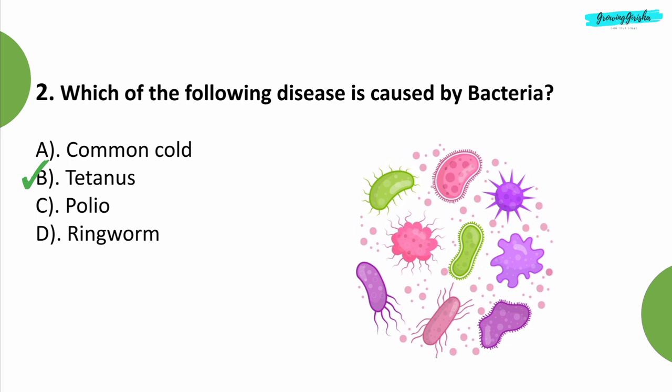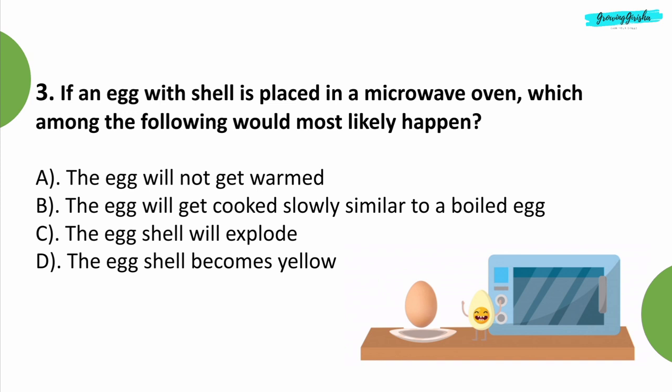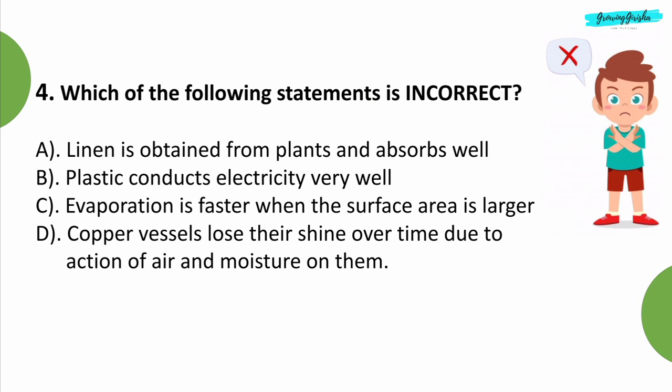Question 3: If an egg with shell is placed in a microwave oven, which among the following would most likely happen? Option C: The egg shell will explode.